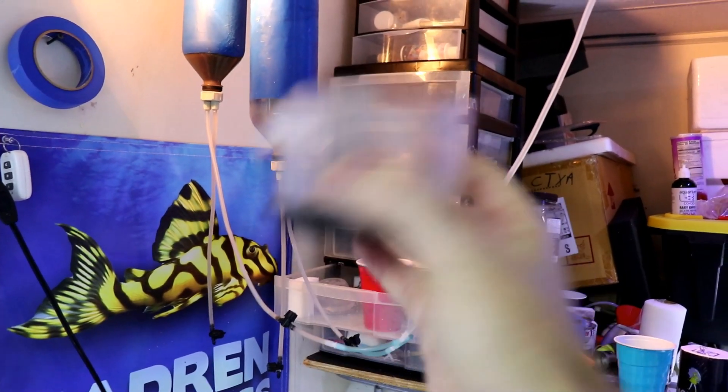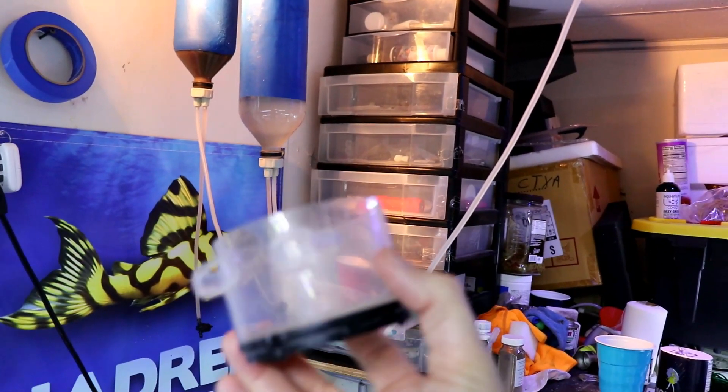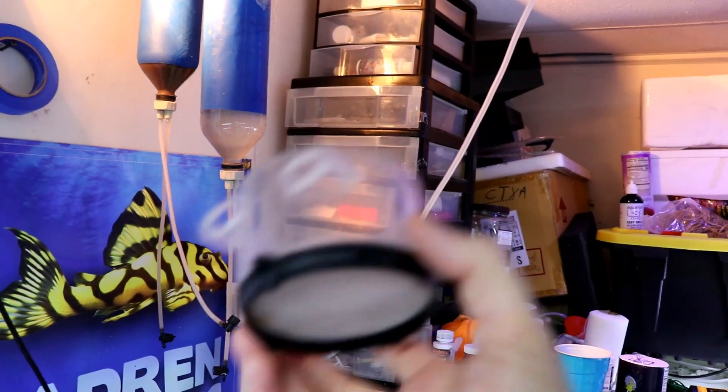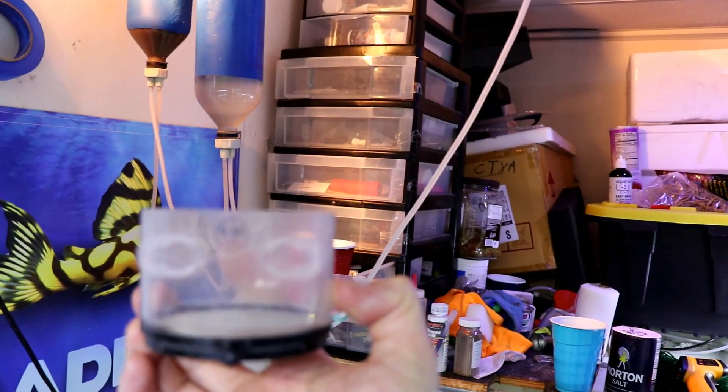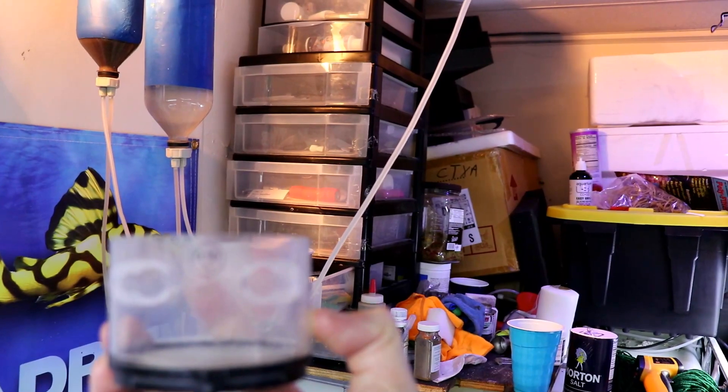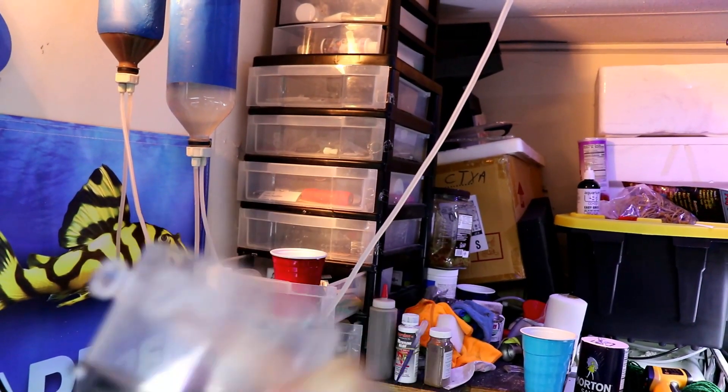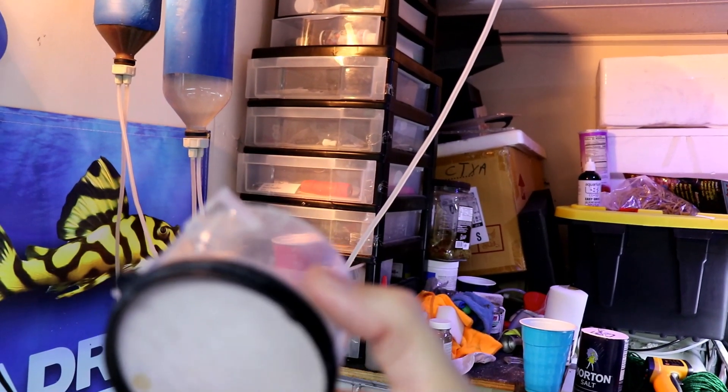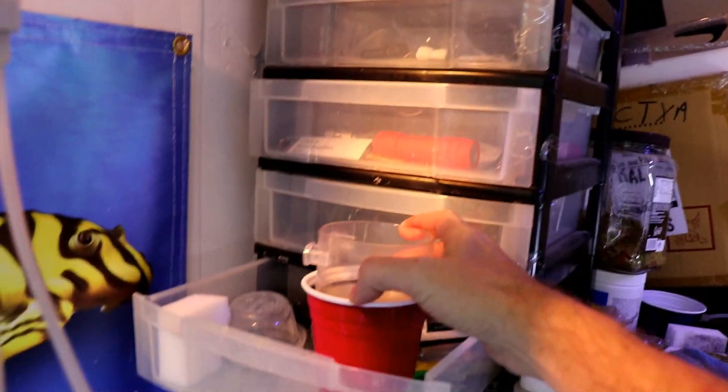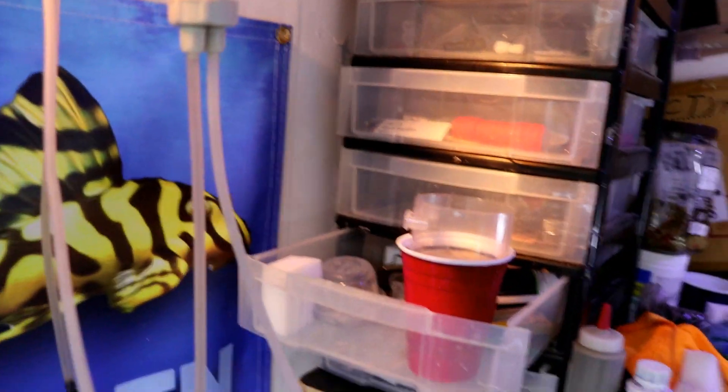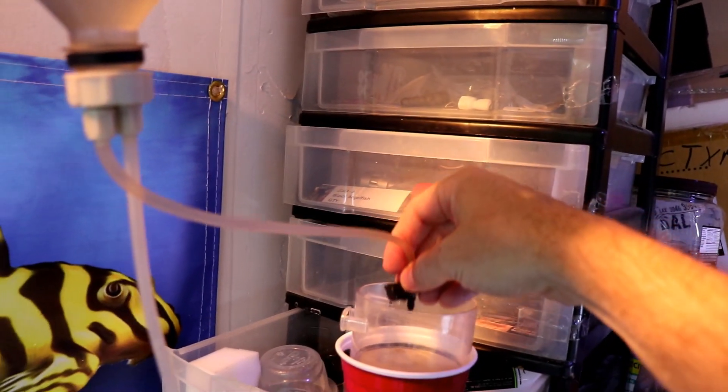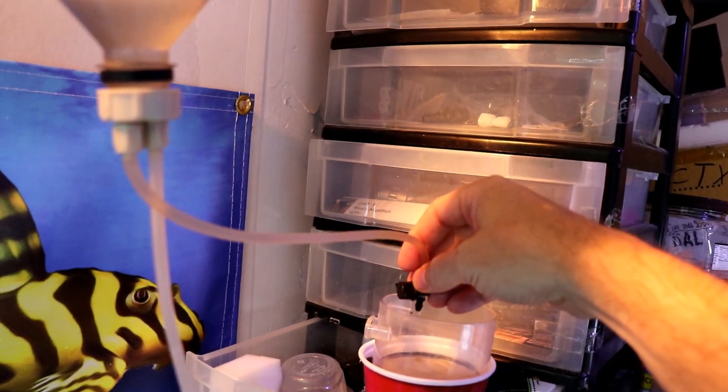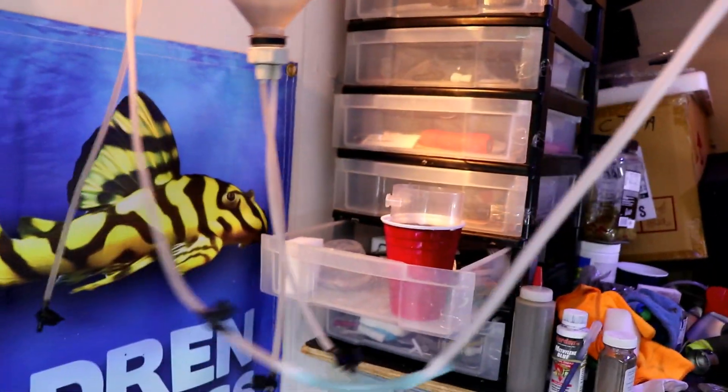This one I absolutely love. This one is a 0.10 millimeter, that's what size you need for baby brine shrimp so that the water gets through but they don't go through. But this one sits perfectly in this cup which makes it real easy, because then I can just come over here, turn this on, and fill this thing up and it'll set there inside that cup.